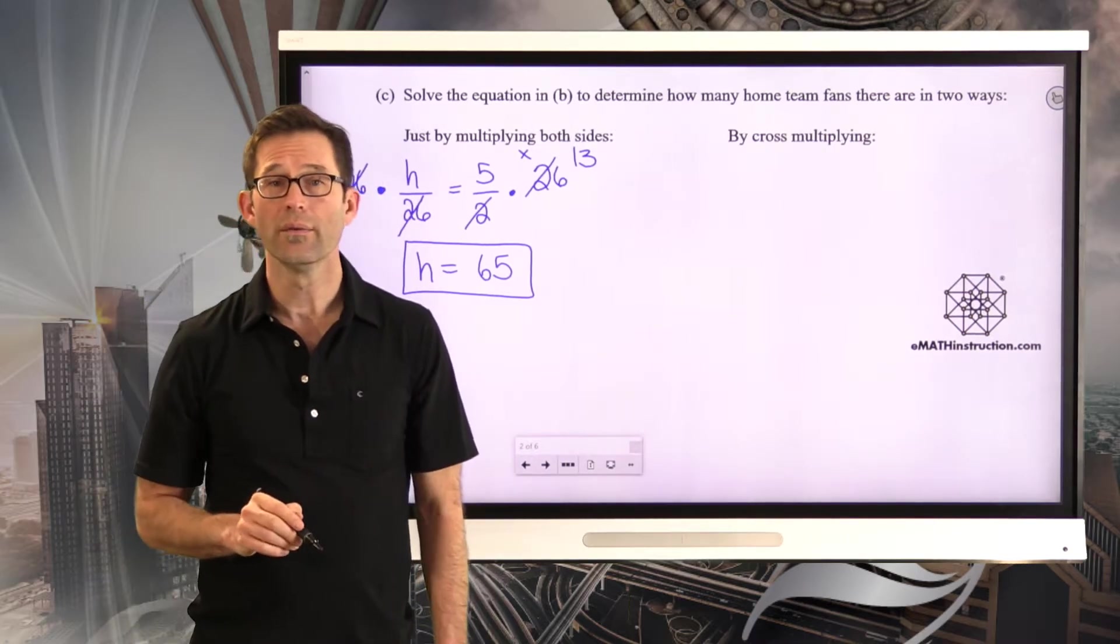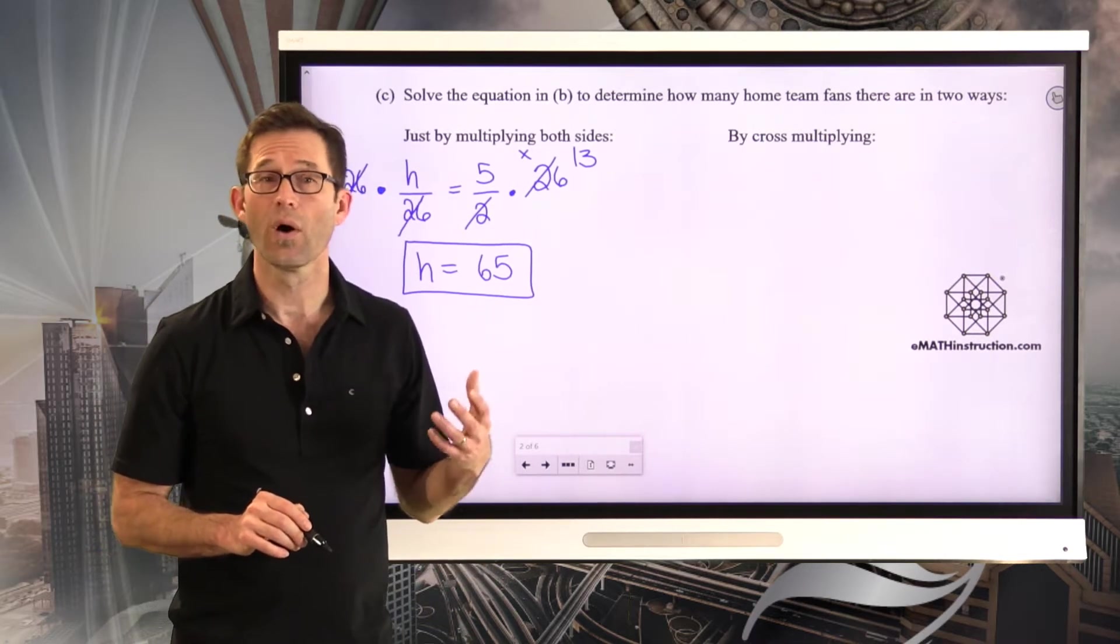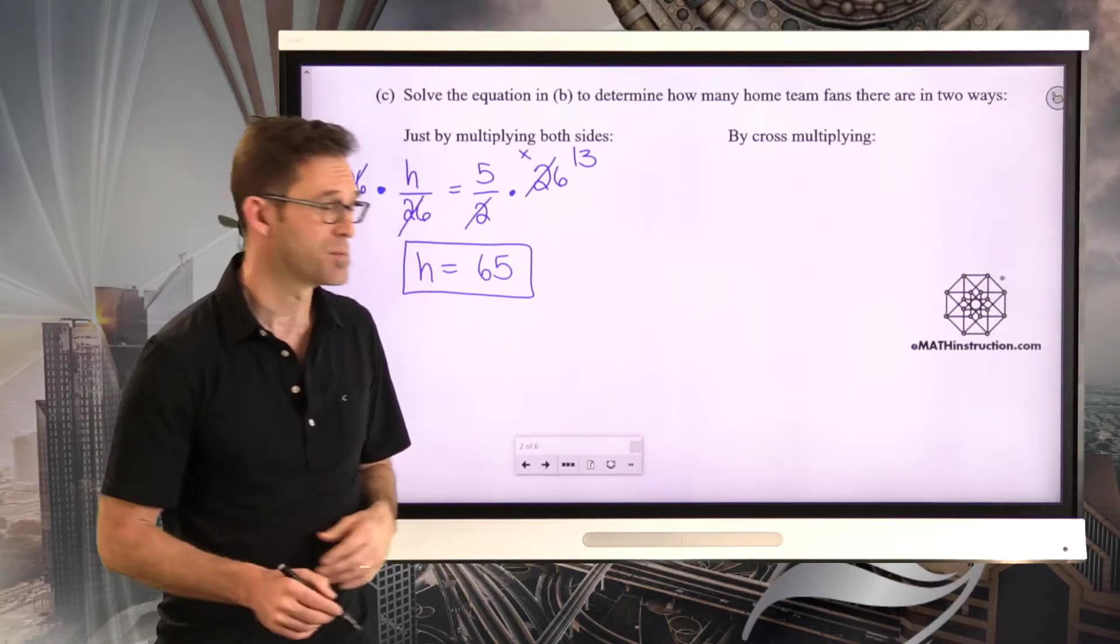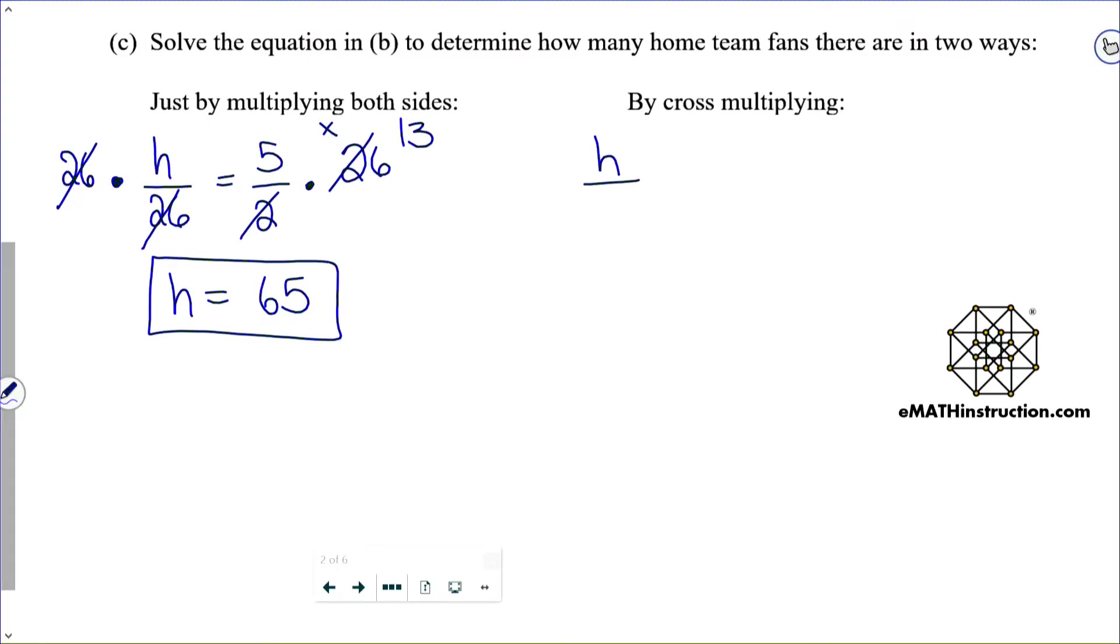Now on the other hand, you can always solve a proportion by doing cross multiplication. So I can also just do the problem as follows. H divided by 26 equals 5 divided by 2. I can cross multiply. 2 times H is 2H. And then I have to do 26 times 5, which is 130. And now to solve this equation, I simply need to divide by 2 on both sides.